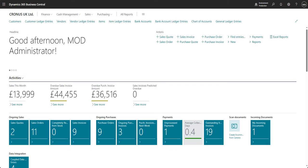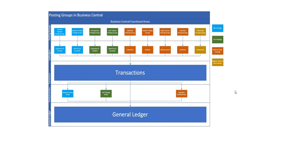Just to illustrate this in diagram form, I've prepared a Visio here to explain how it works. I've got a few of the different subledgers here — customers, vendors, items, bank accounts, inventory, fixed assets. There are more: employees, resources, and a few others, but I've put a few in there to illustrate how it works.